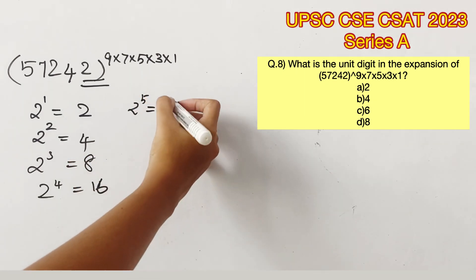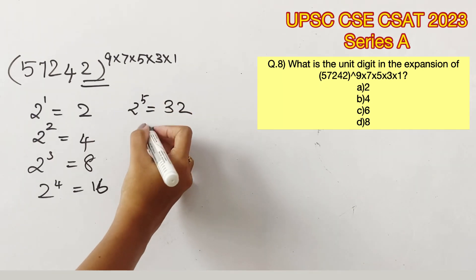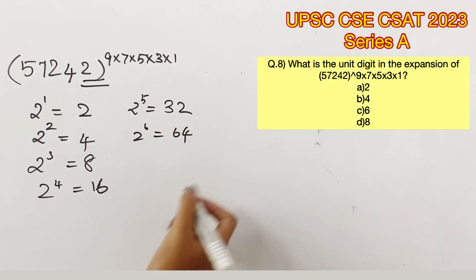Now if you see 2^5 gives us 32, 2^6 gives us 64 and 2^7 gives us a number ending with 8, 2^8 will give us a number ending with 6.